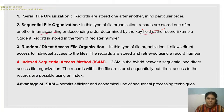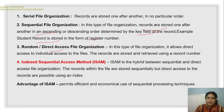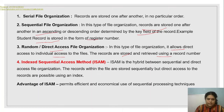An example is a student record stored in the form of register number. In direct access file organization, it allows direct access to individual records — they are stored and retrieved using the record number. The third type is the index sequential access method, or ISAM.